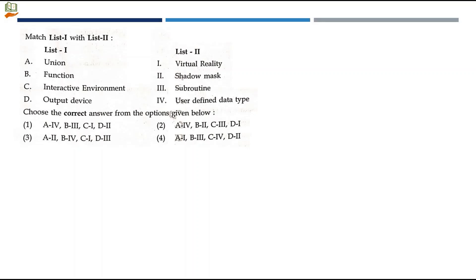Next question: match list one with list two. Union and function belong to programming languages part. Interactive environment and output device belong to computer graphics part. Let's see for union. We know about struct union. They are user defined data types. When I want to use union or structure, I define some name, characters, decimal numbers. Variables inside the block will be of basic data types like int, float, character. But what we create comes under struct and union. Struct and union are similar to a class. They don't function like a class, but the structure is similar. We can mark A to 4. A4 is available in two options. We can rule out the other two.